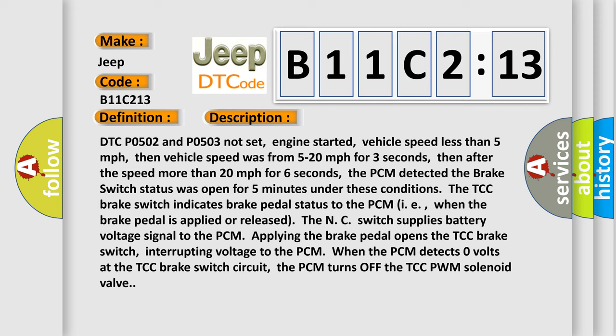DTC P0502 and P0503 not set, engine started, vehicle speed less than 5 miles per hour, then vehicle speed was from 5 to 20 miles per hour for 3 seconds, then after the speed more than 20 miles per hour for 6 seconds.